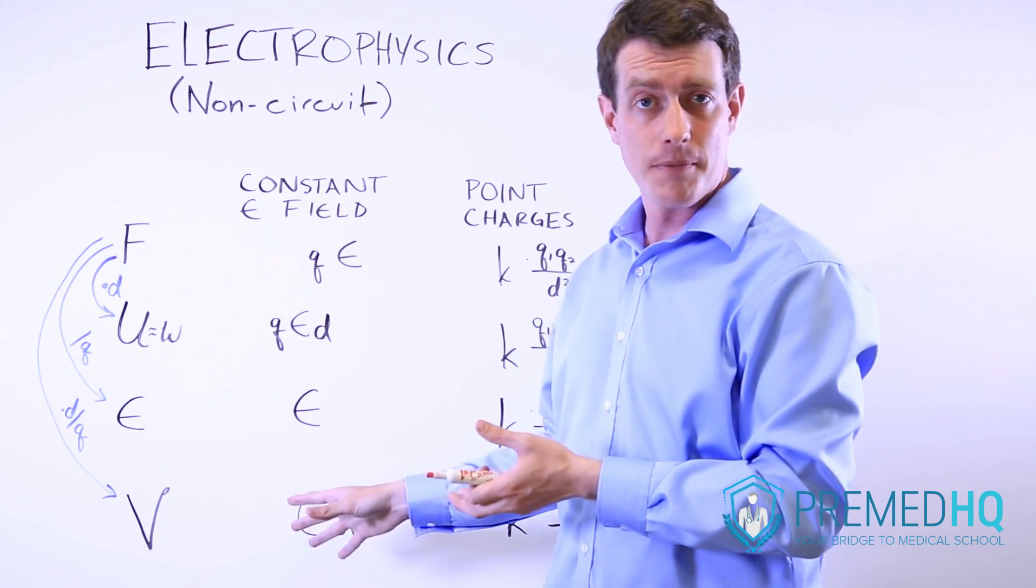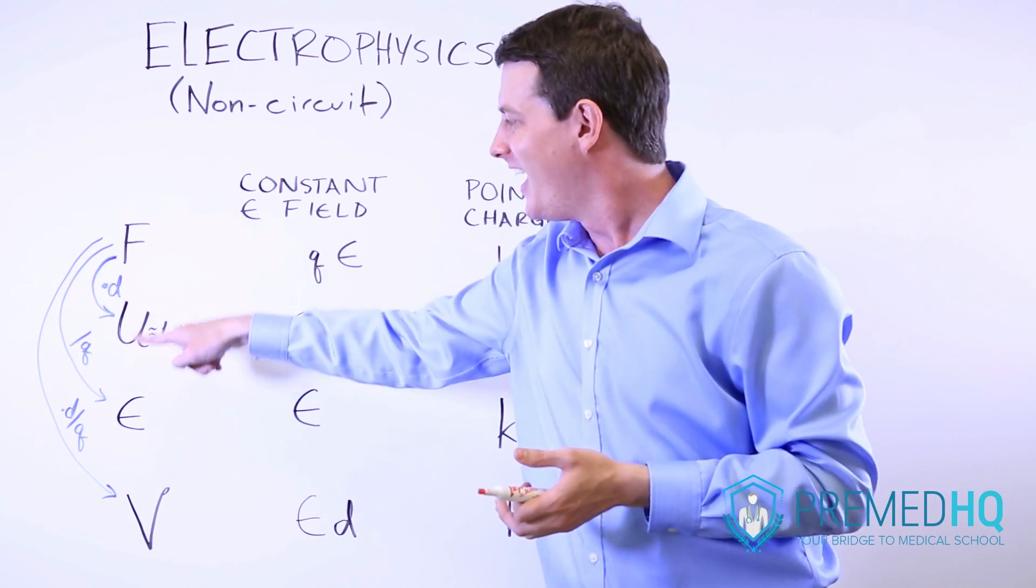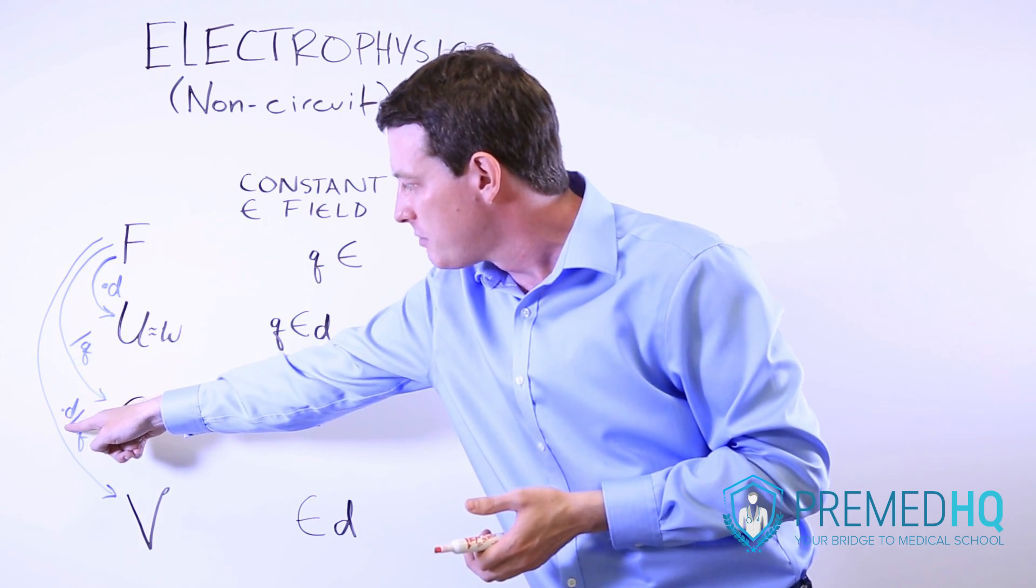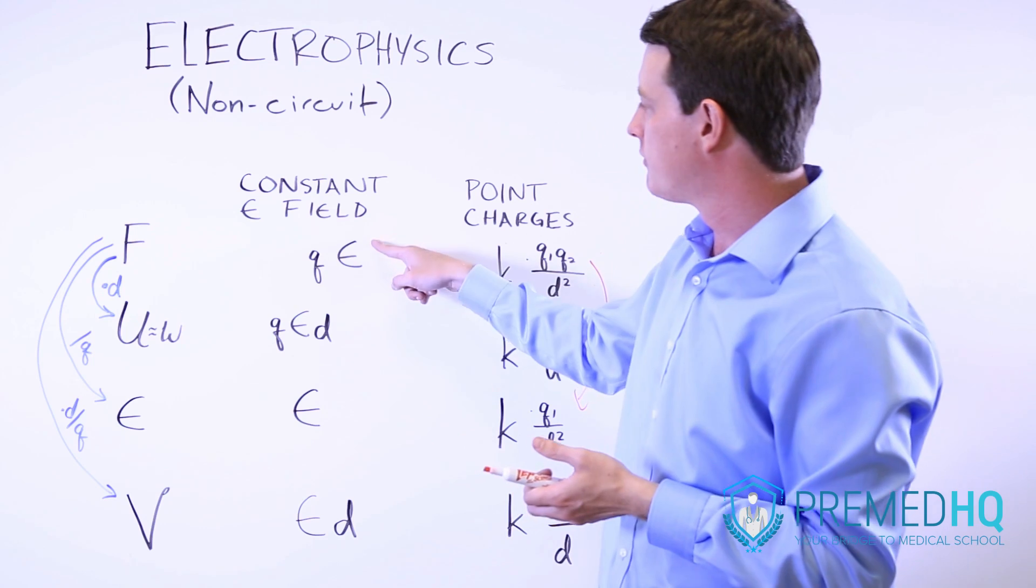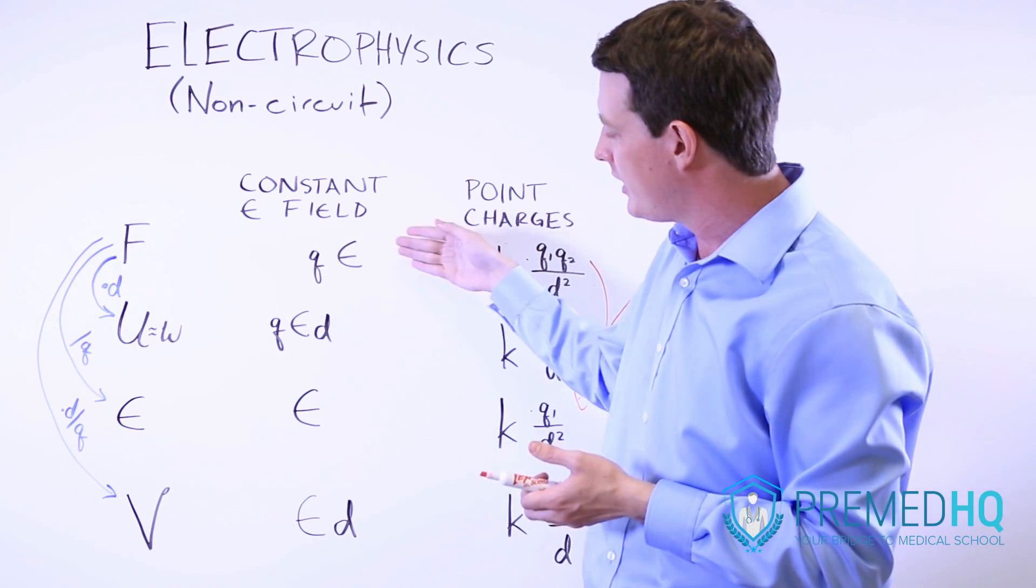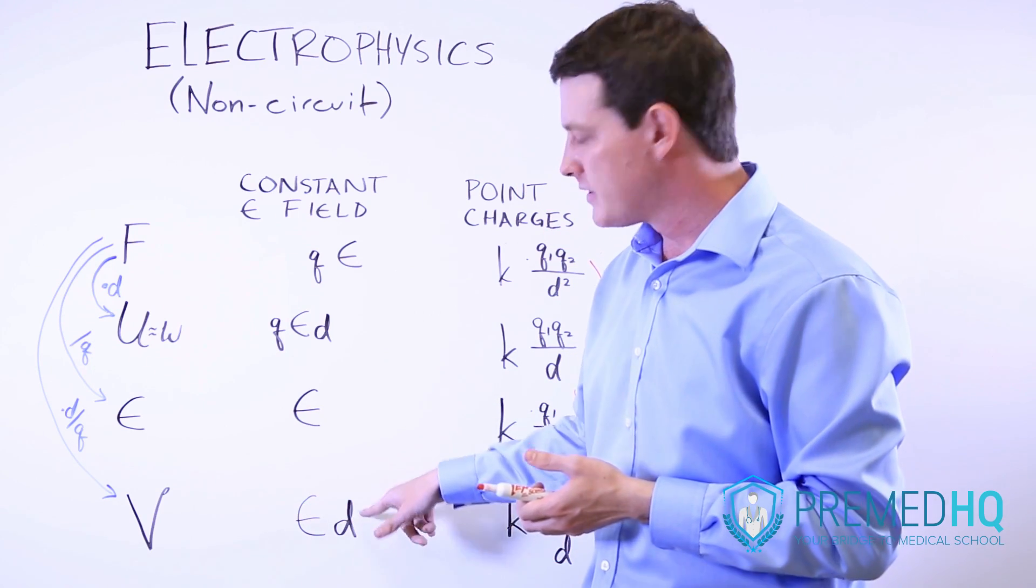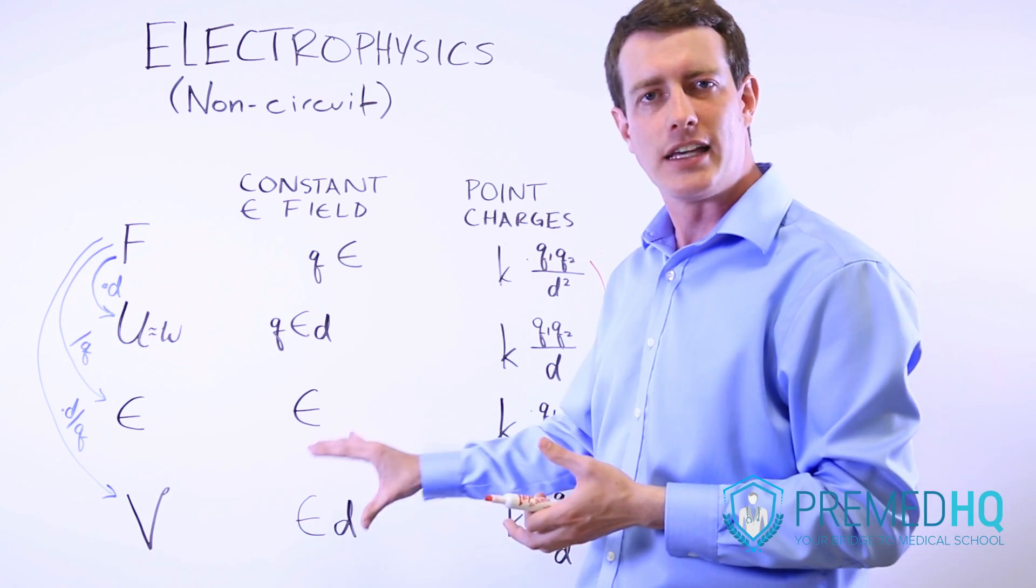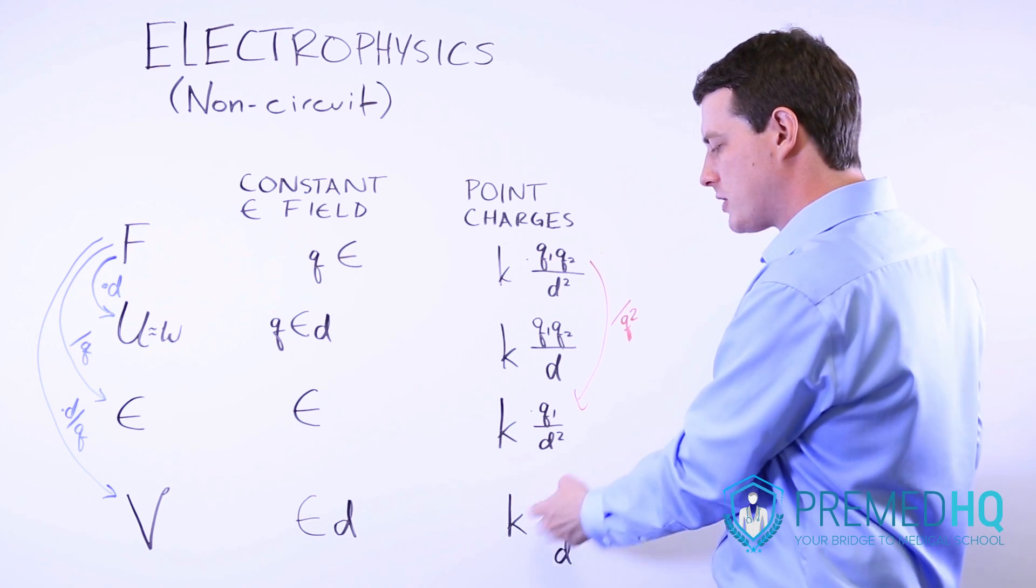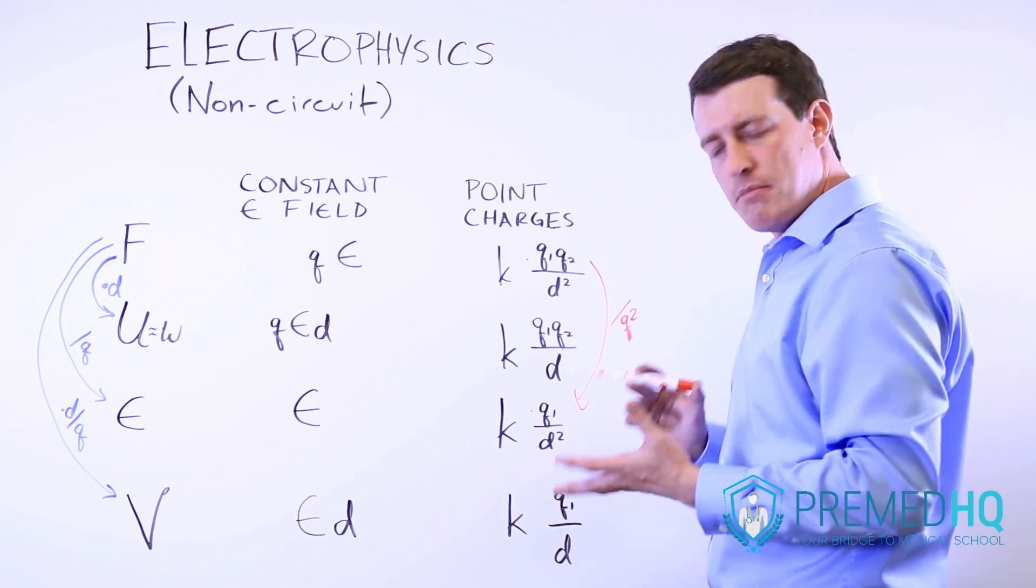Now to get from there to voltage, you basically do both of these adjustments. You multiply by distance, and then you divide by the subject charge. So you're going to be both multiplying by D and dividing by Q. So to go from QE, you multiply it by D, and then you divide it by Q. What you're left with is this electric field times the distance between the objects. And that gives you voltage. And to do that over here, you basically divide by Q2 and multiply by D. And what you're left with is K times Q1 divided by distance.